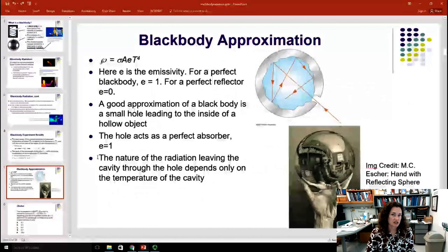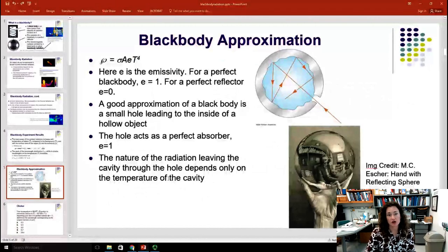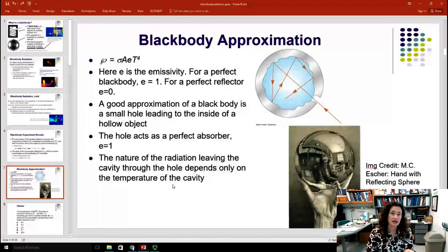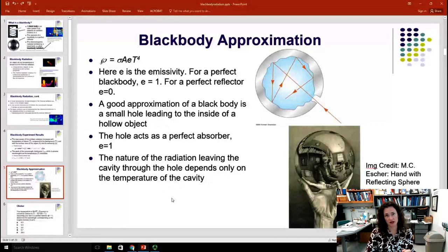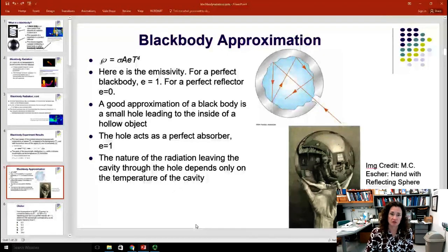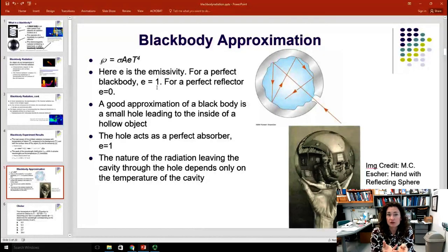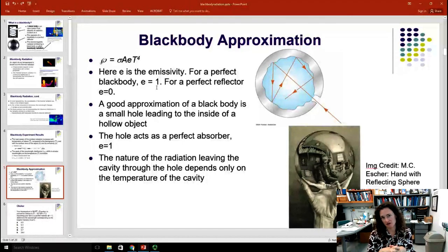E is a parameter called the emissivity, and it characterizes how good of a black body something is. In other words, how well it meets that perfect black body approximation. A perfect black body, you'd have an emissivity equal to 1. And then for that spherical mirror, or my disco ball that you talked about, for a perfect reflector, you would have E is equal to 0.